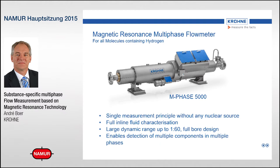By using magnetic resonance, an inline fluid characterization can also be done, which means that you can install the instrument without any further parameterization or calibration and actually characterize the liquid or gas going through it. The flow meter has a very large dynamic range with a scale of 1 to 60. It's a full bore design with no moving parts inside or anything protruding inside the pipe.